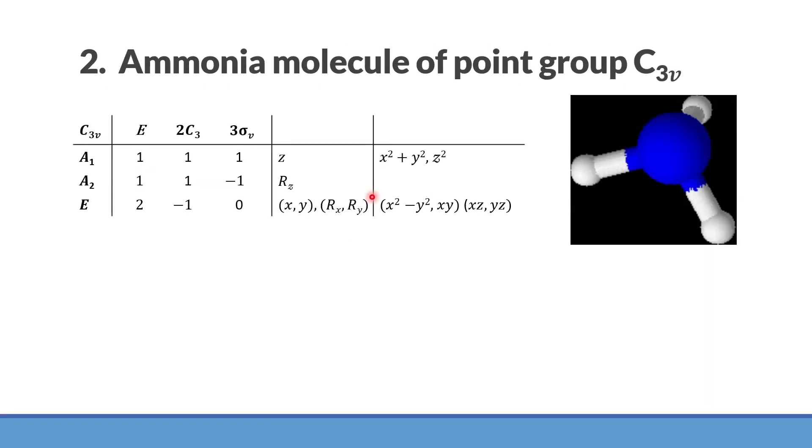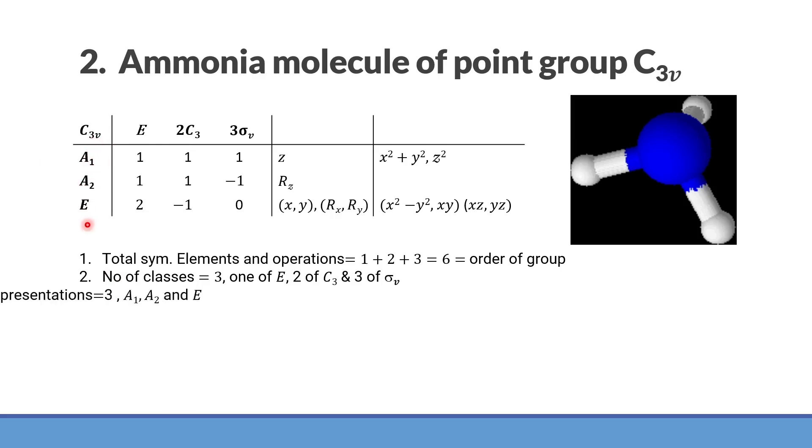Let's talk about ammonia molecule which has C3v point group. It has 6 number of operations, order is 6 and number of classes are 3. Identity is one class. C3^1, C3^2 is in one class and sigma v, sigma v prime, sigma v double prime, they belong to the same class that we have studied in earlier videos also. So there are 3 classes and as a consequence, there will be 3 irreducible representations.